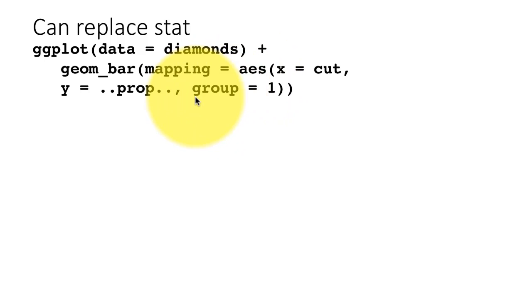Then within the aesthetic, just add group equals one. The reason being, if you looked at the transformed data we saw earlier, you saw that there was a column called proportions in the transformed data, and all of those proportions were one.